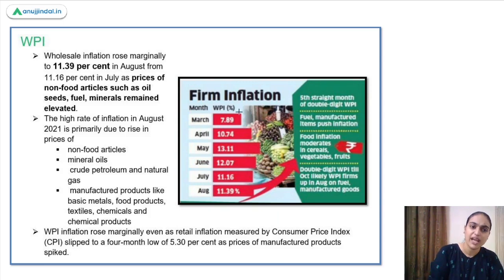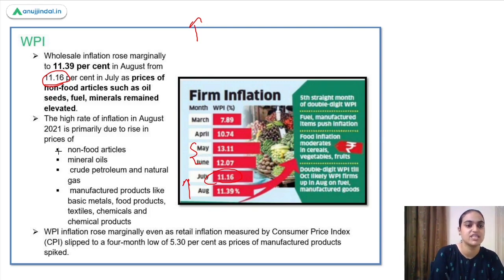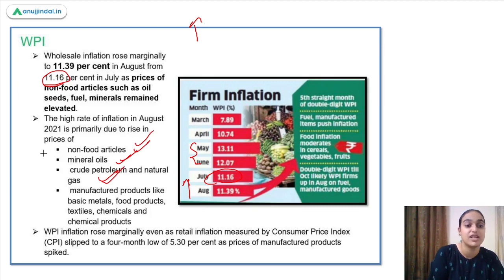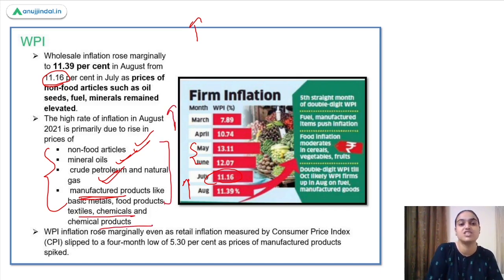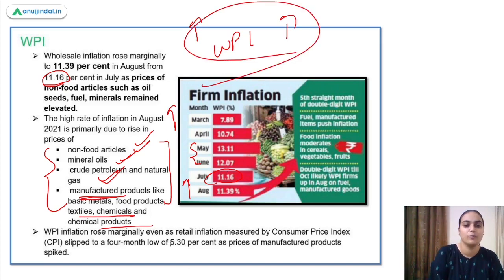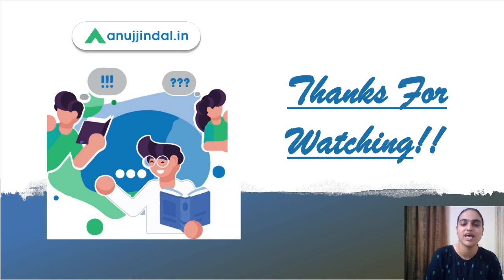Talking about WPI, it rose marginally to 11.39% in August from 11.16% in July. We had seen high levels during May and June, then a reduction in July, and again a rise in August. This rise is primarily due to increases in prices of non-food articles, mineral oils, crude petroleum, natural gas, and manufactured products including basic metals, food products, textiles, chemicals, and chemical products. With this, I would like to end this session. Thank you so much.